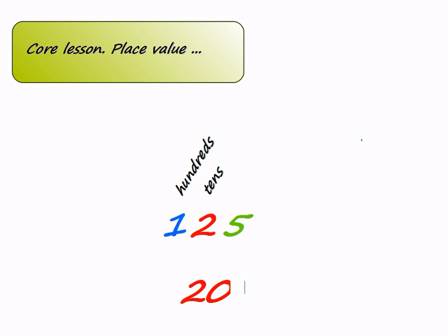Finally, if you go one more place to the right of the tens place, you get the last or rightmost digit representing the ones place — 5 in our example. It tells you how many individual items or units you have in the number. This implies that our 5 still remains 5, or its place value is 5.